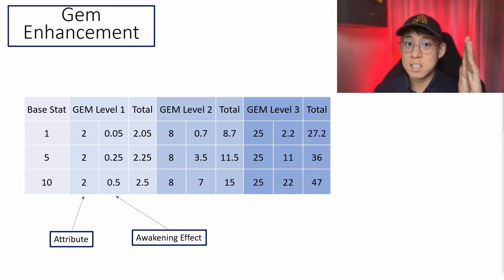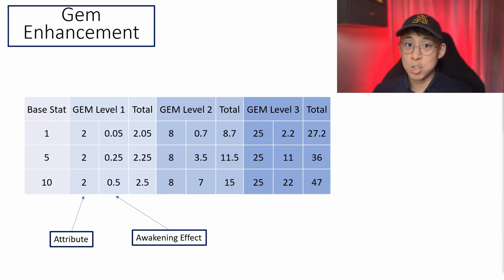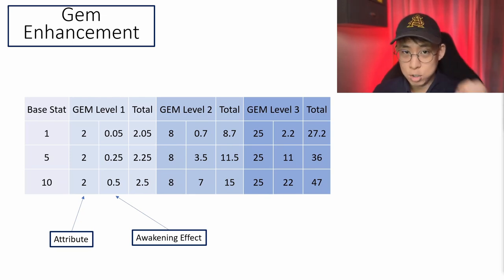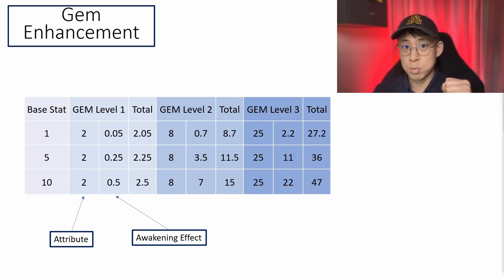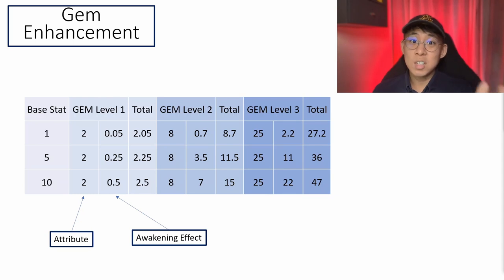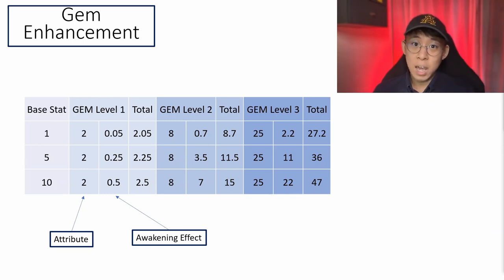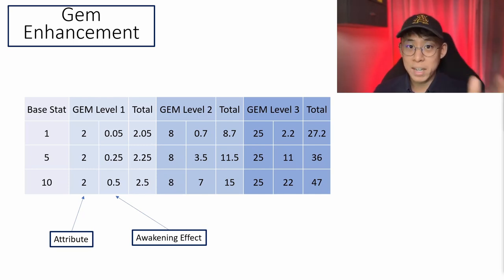However, this difference increases as gem level increases. A level 2 gem adds about 15 attributes if the base stat is 10. At gem level 3, a shoe with base stat 1 will have the gem contributing only 27.2 attributes, but a shoe with base stat 10 will get 47 attributes from that same gem. The efficiency of a gem depends highly on the base stat of the shoe. If you're planning to use a shoe long-term or use gems to scale your GST earnings, get a shoe with good base efficiency and resilience to maximize your GST earnings.